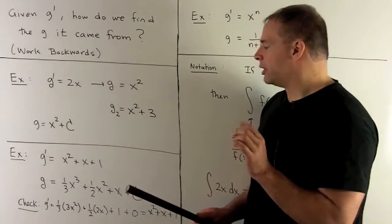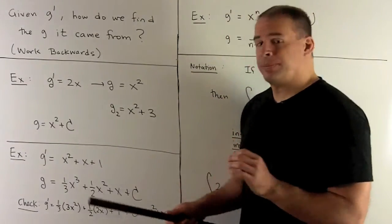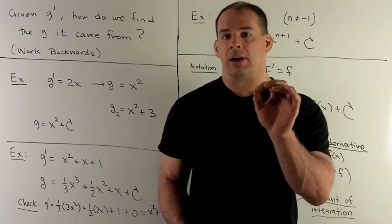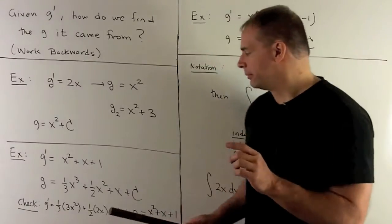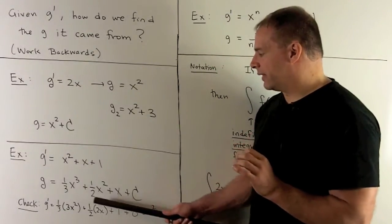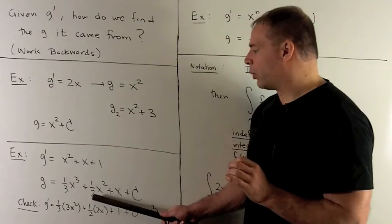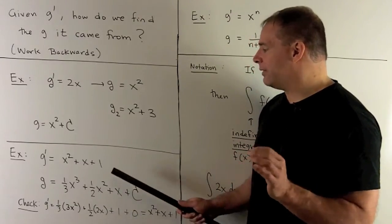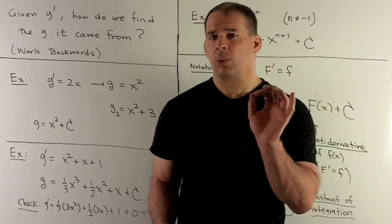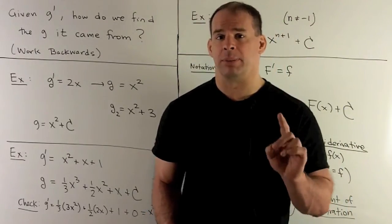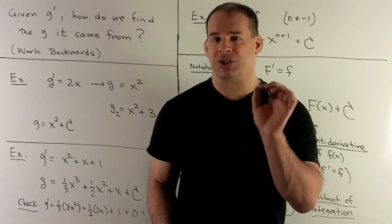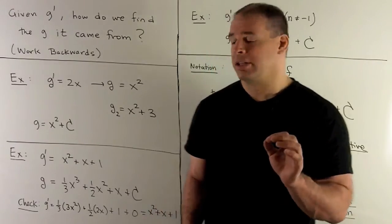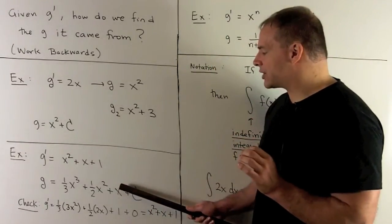For x (which is x to the first), add one to get x squared, then flip over to get one-half. If you take the derivative of one-half x squared, the 2 comes down and cancels with the one-half, leaving x. For the constant 1, think of it as x to the zero: add one to get x to the first, flip over to get one over one, so we just get x. The derivative of x is indeed 1.